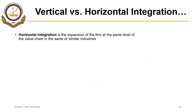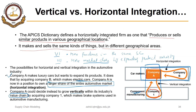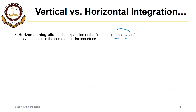Horizontal integration is the expansion of the firm at the same level of the value chain in the same or similar industries. If the company acquired company one, it would be manufacturing something within the same supply chain of luxury cars — that is vertical integration. The company expands at the same level of the value chain in the same or similar industries. If the industry is different and the company is making a completely different product, it is called diversification.